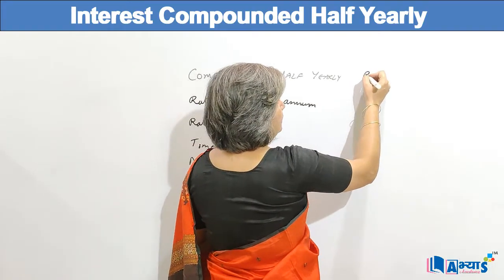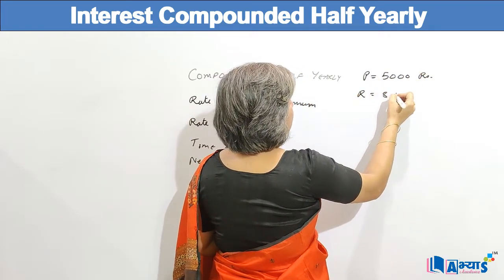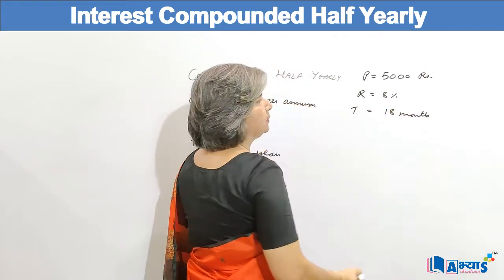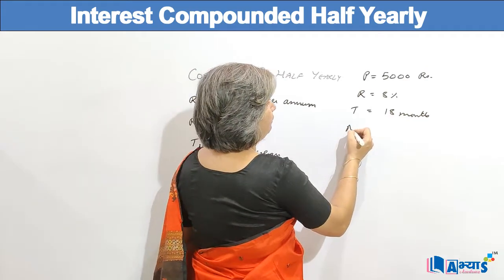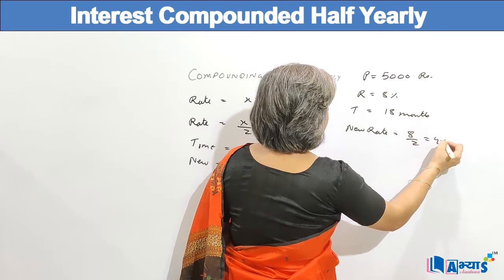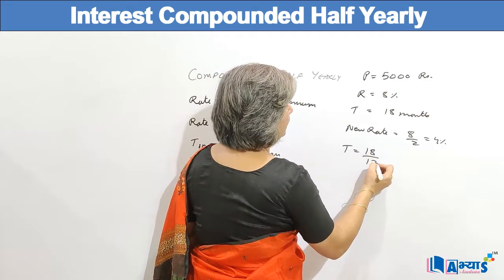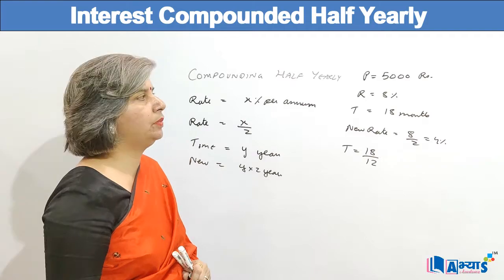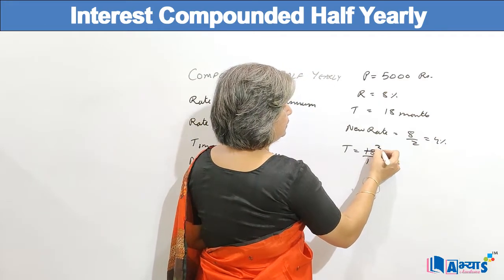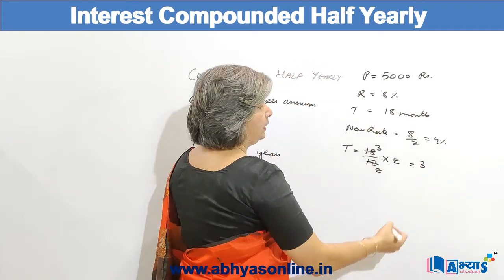Suppose the principal is five thousand rupees, the rate is eight percent, and the time is eighteen months, and we are compounding it half yearly. The new rate will be eight divided by two, that is four percent. The time is first converted into years: eighteen divided by twelve. Since it is compounded half yearly we double the years, so eighteen over twelve into two gives us three half years.